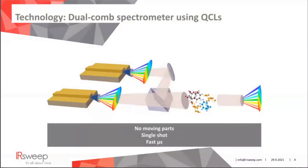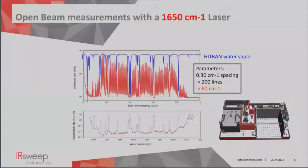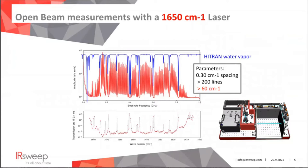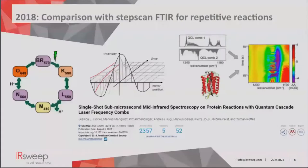Diving a bit more into the technology: two frequency-comb beams are mixed on a beam splitter and detected on a high-bandwidth MCT detector. Each pair of optical modes produces a radiofrequency beat note. The radiofrequency spectrum can then be measured with conventional electronics and represents the optical spectrum. With an open-beam measurement, we present a heterodyne signal obtained with a 1650 wavenumber laser, which is often used in protein dynamics, and a water vapor spectrum shows the information of the primary heterodyne signal in the same range.